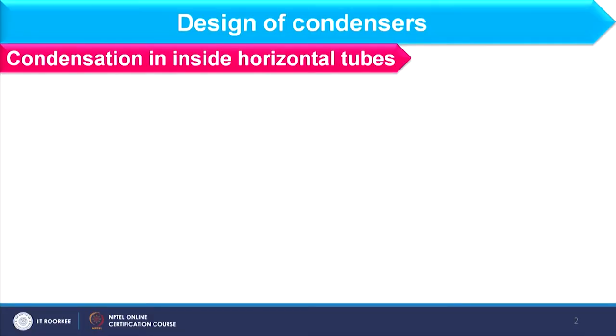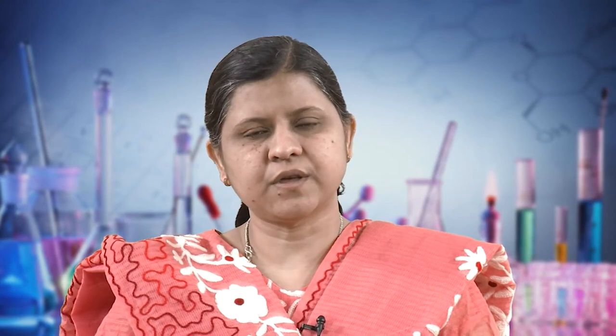Let us focus on design of condenser when condensation is occurring inside the horizontal tube. We have already covered the design of condenser where condensation is occurring on the shell side of a horizontal condenser and on the shell side and tube side of a vertical condenser. Here condensation occurs in a horizontal tube, and the heat transfer coefficient at any point along the tube will depend on the flow pattern at that point.